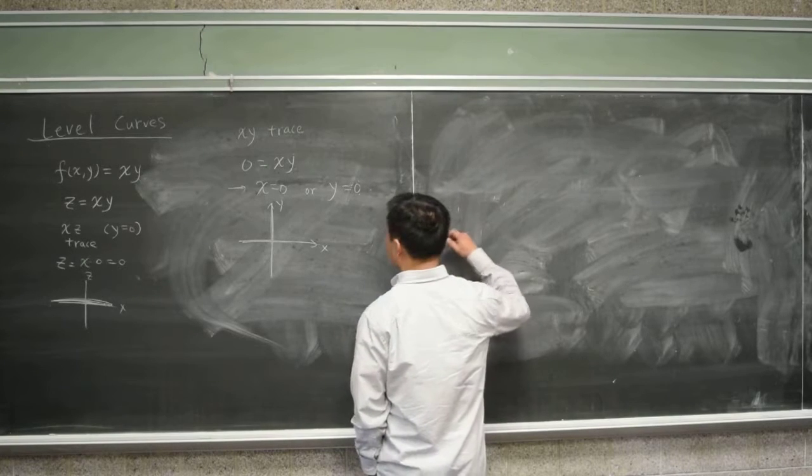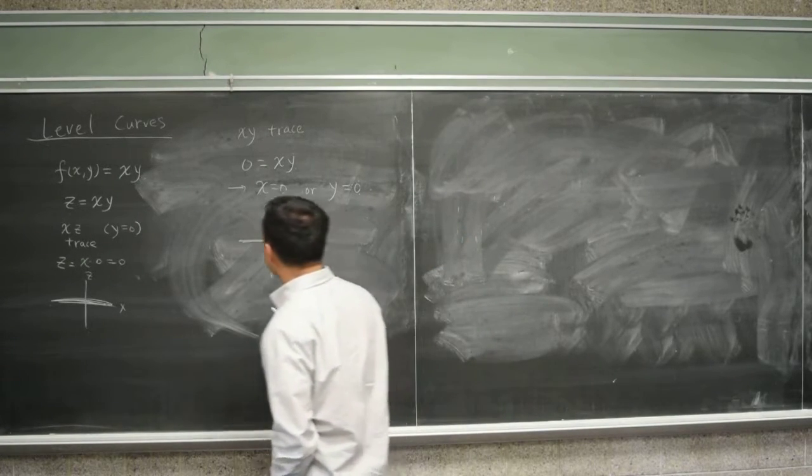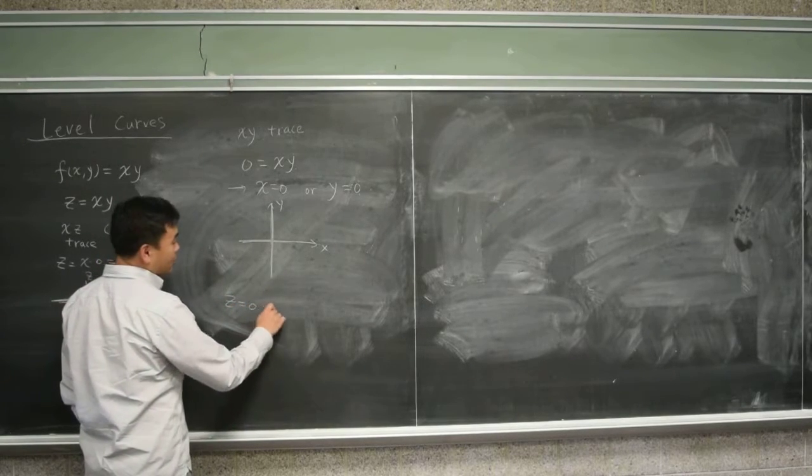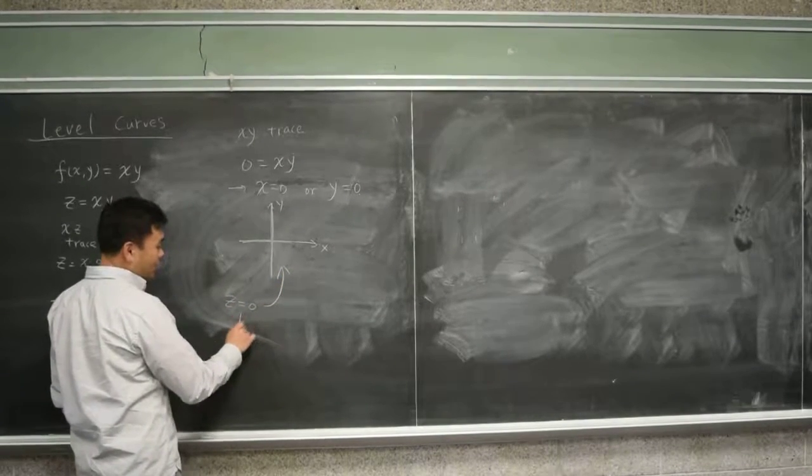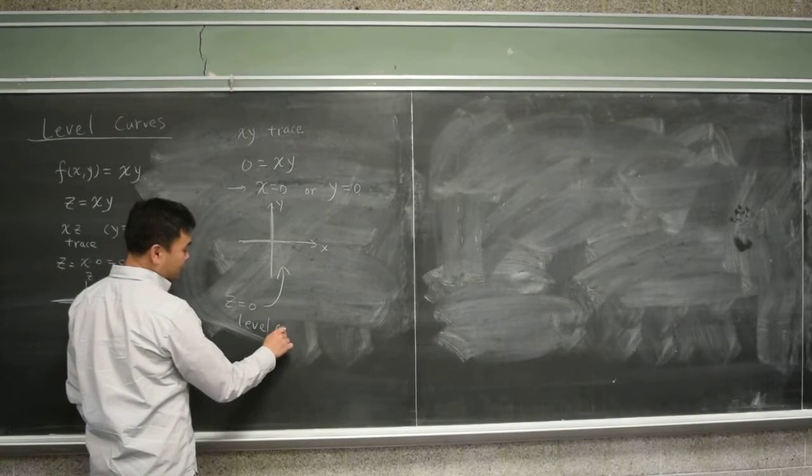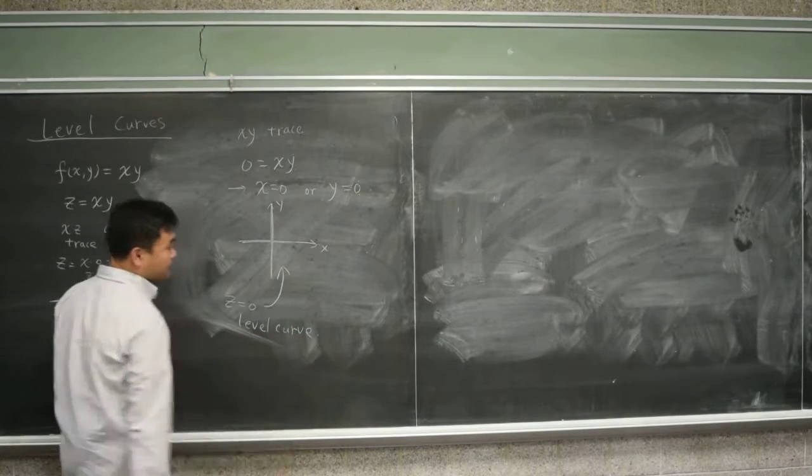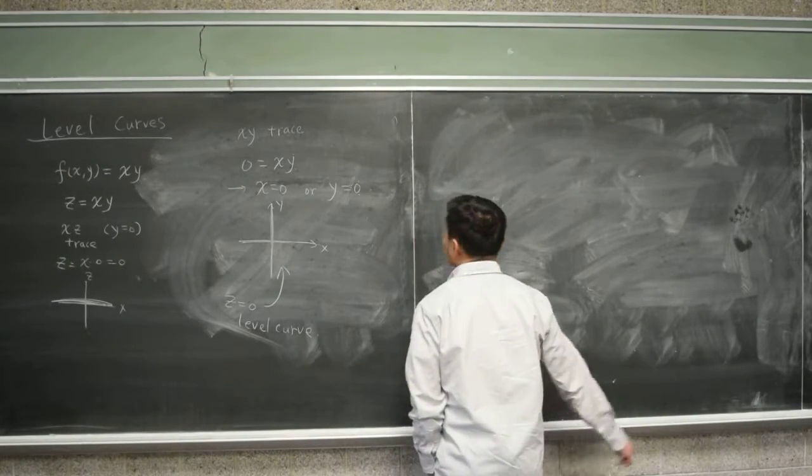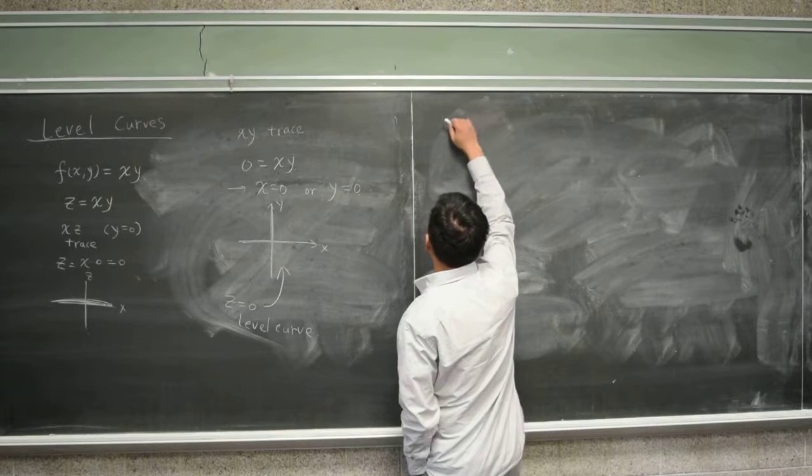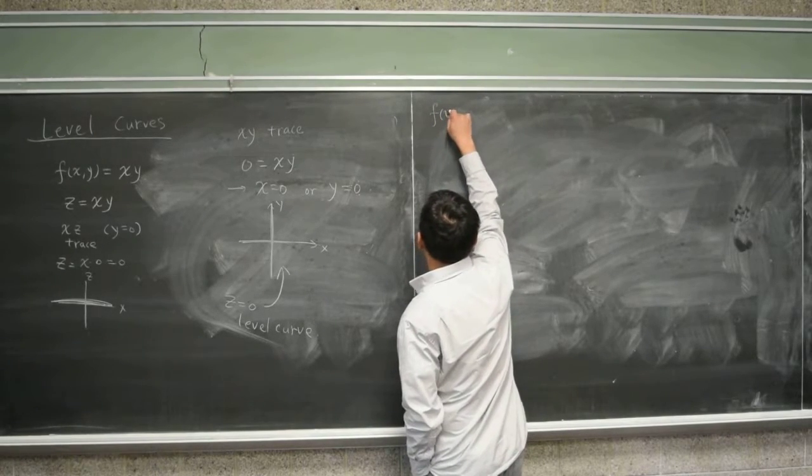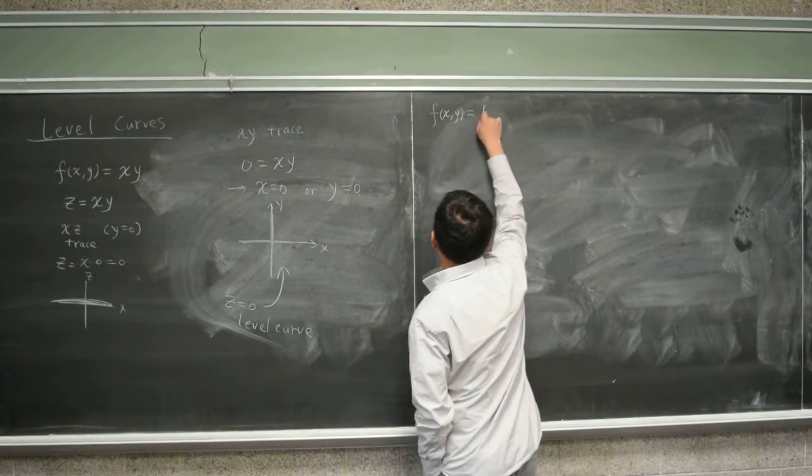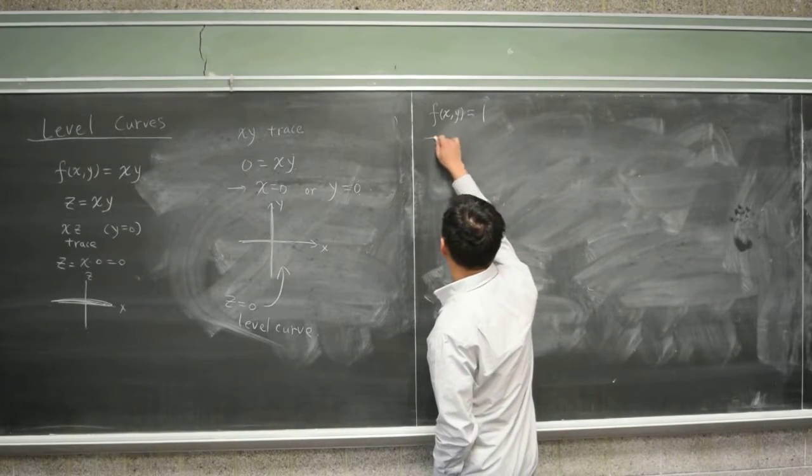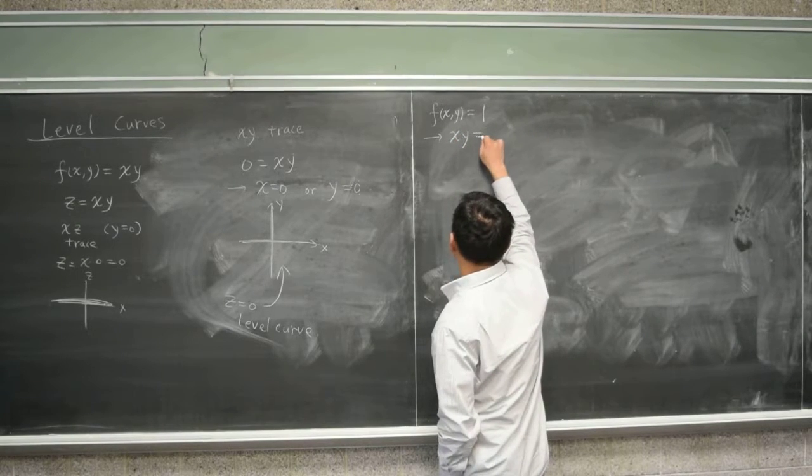Let's do that. Actually, xy trace the same as setting z equal to zero, so you can think of this as a z equal to zero level curve. And then, let's think about z equal to one. So the level curve we want to think about is f(xy) equal to one. If you set the function equal to one, which means x times y is equal to one.